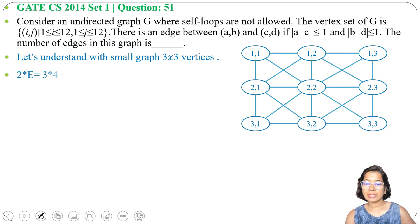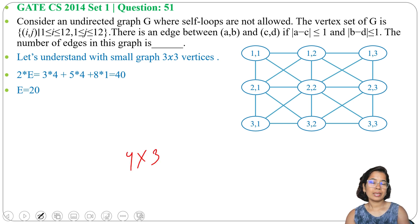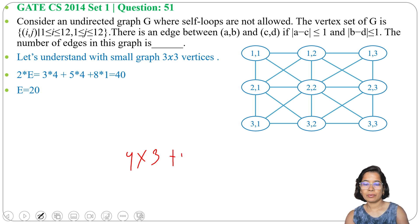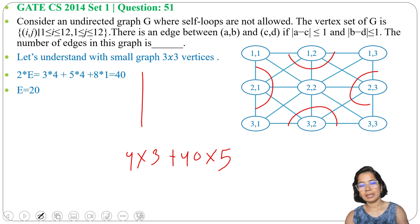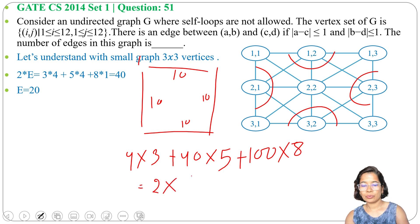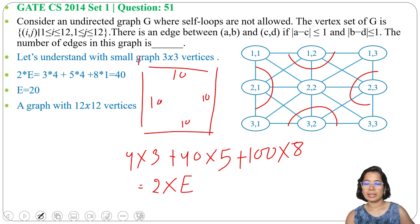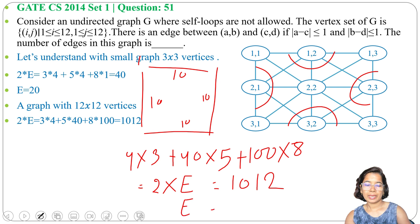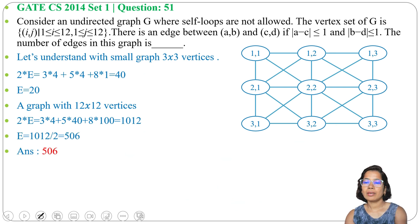Now let's generalize to the 12×12 case. There are still 4 corner vertices, each with degree 3: 4 × 3 = 12. On each of the 4 sides, there are 12 minus 2 = 10 non-corner edge vertices, each with degree 5: 4 × 10 × 5 = 200. The interior has 10 × 10 = 100 vertices, each with degree 8: 100 × 8 = 800. Total degree sum = 12 + 200 + 800 = 1012. So number of edges = 1012 / 2 = 506.